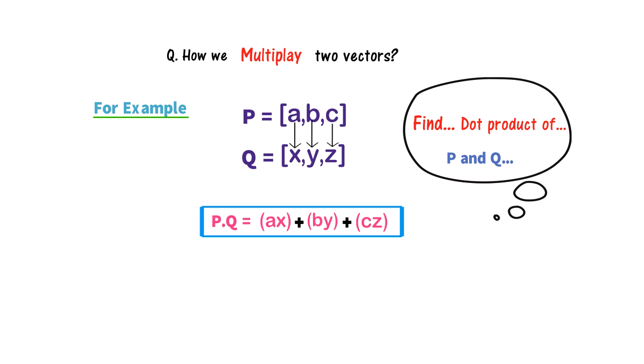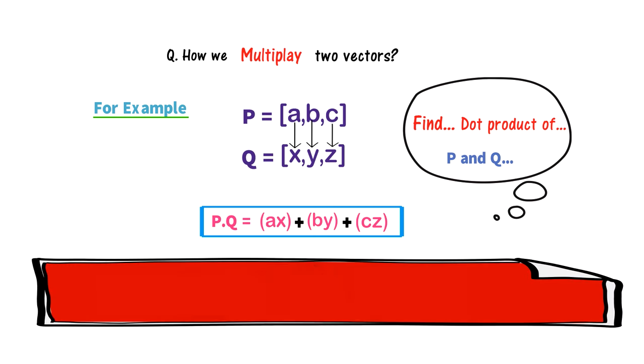This is the dot product, also called the scalar product, of vector P and vector Q. Remember that the dot product of two vectors P and Q will always give a number.